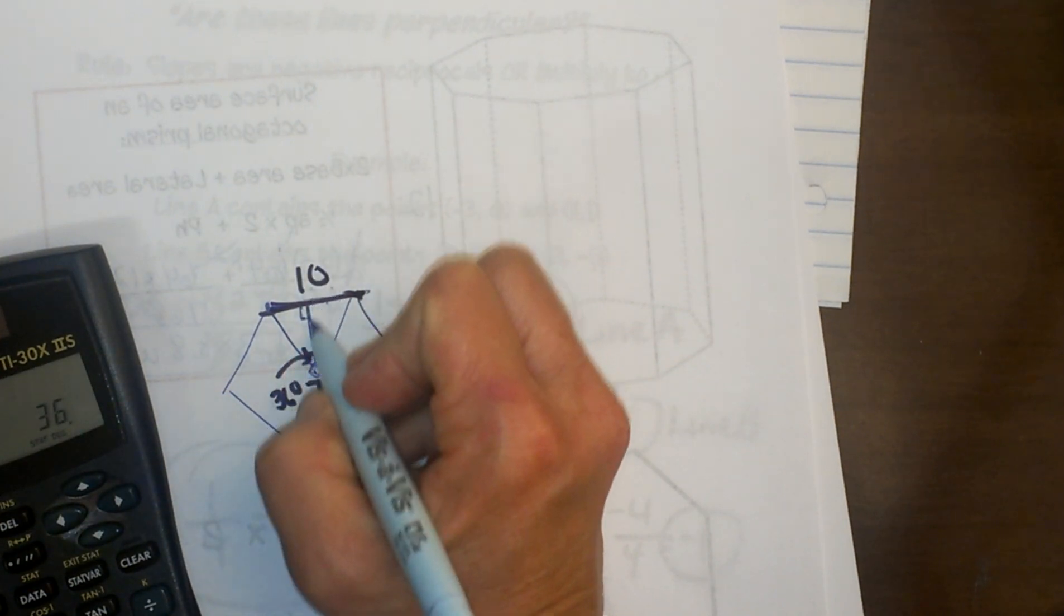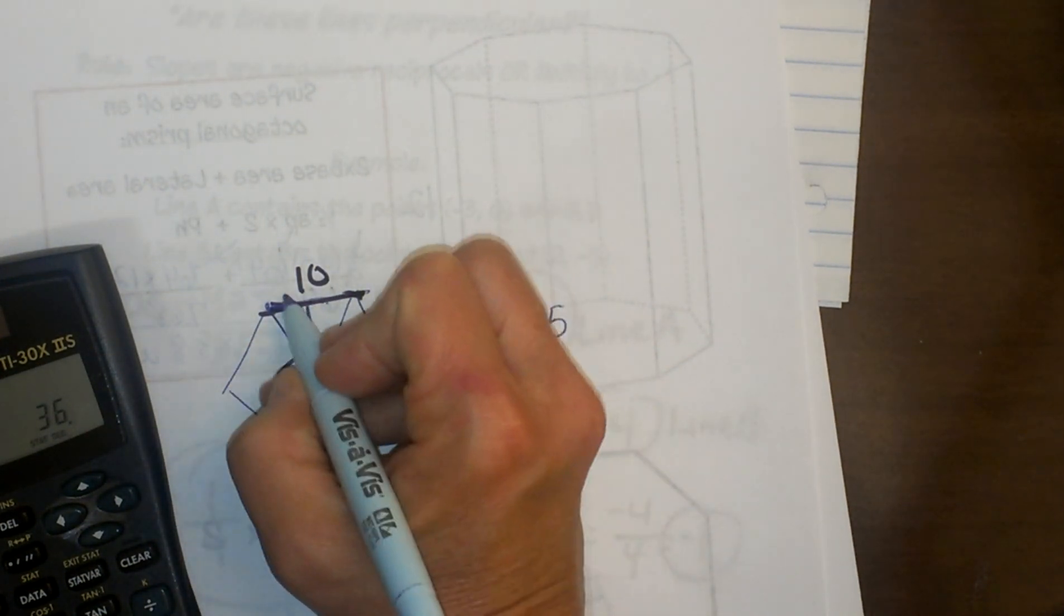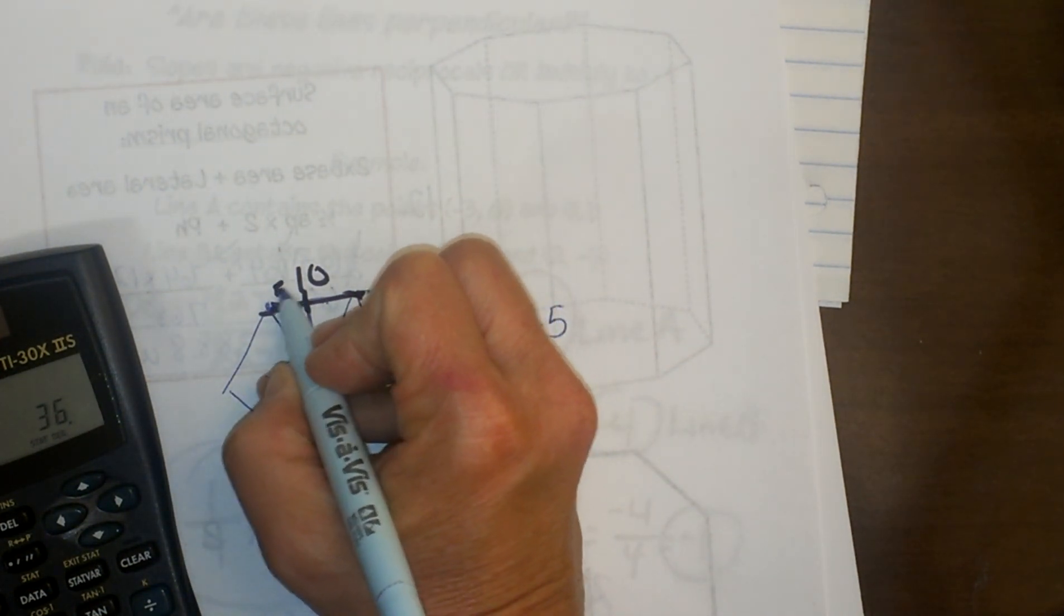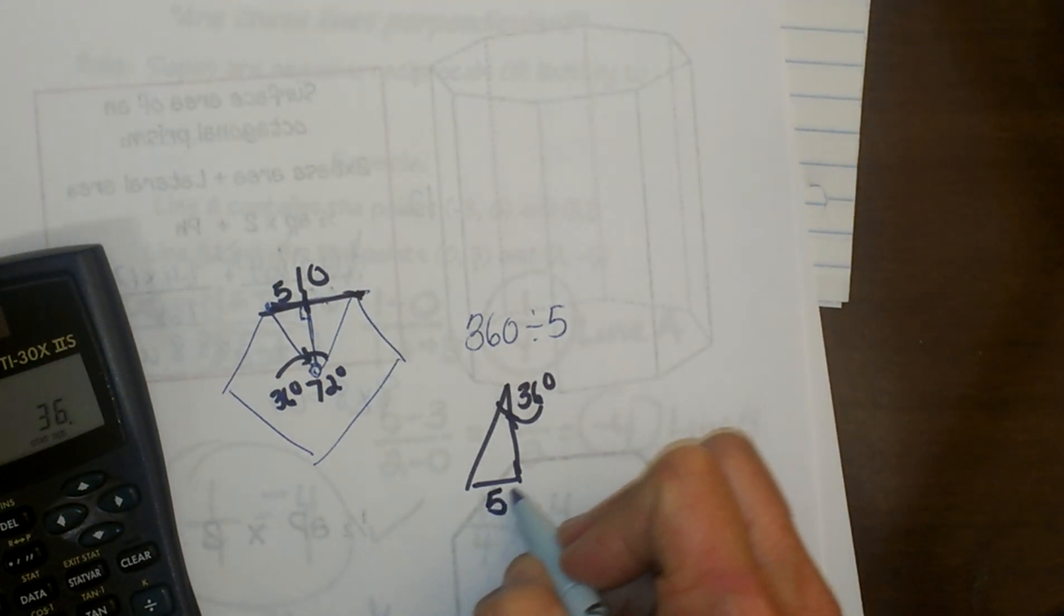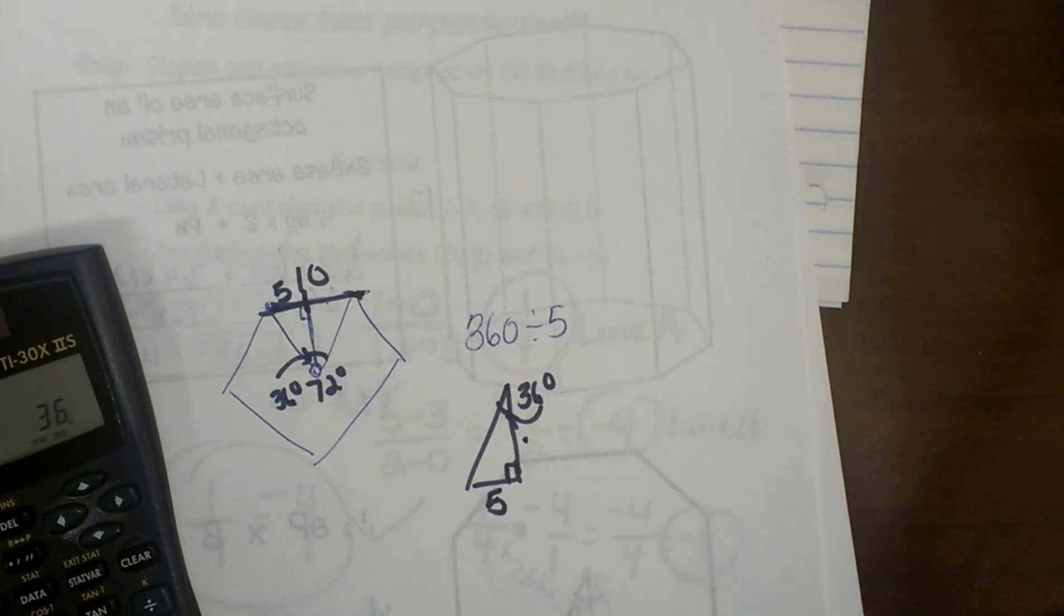And the trig ratio you're going to use, given if you know the side—let's say in this case the side was 10 of the pentagon—that means you would use 5 for the side of the triangle. And again, you would use your opposite over adjacent and set it up as a tangent again.